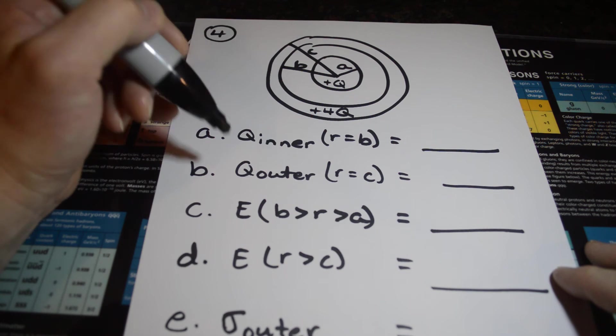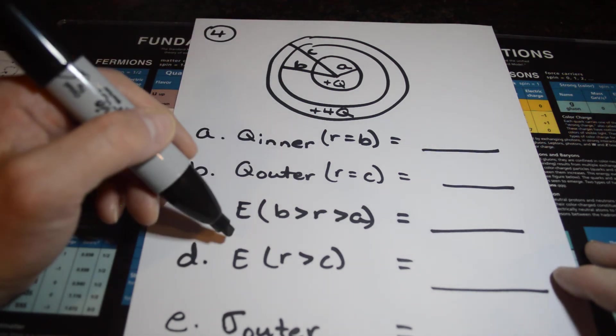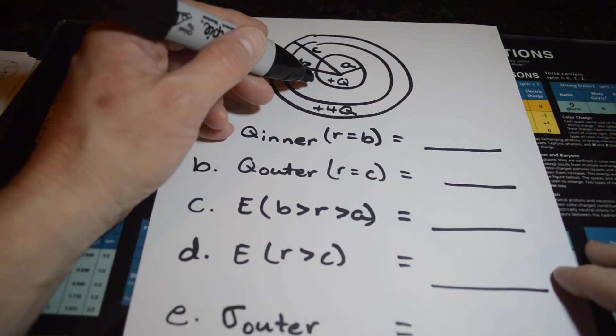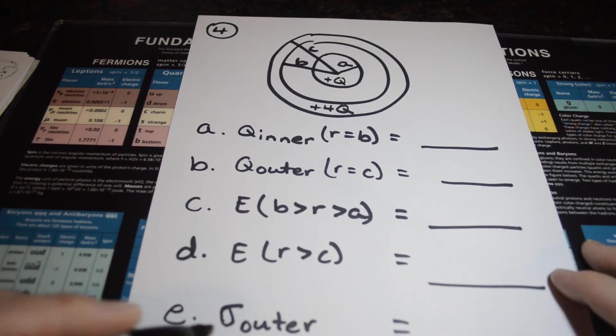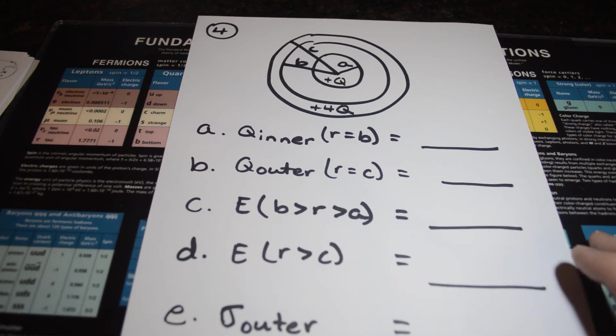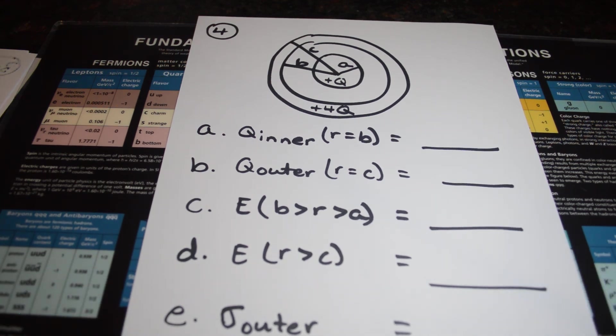What are the electric field strengths in the region non-conducting, and then outside R equals C? And then what is the surface charge density for that? So take a second, pause, and see if you can come up with some answers, and then we'll come back. Okay, we're back.